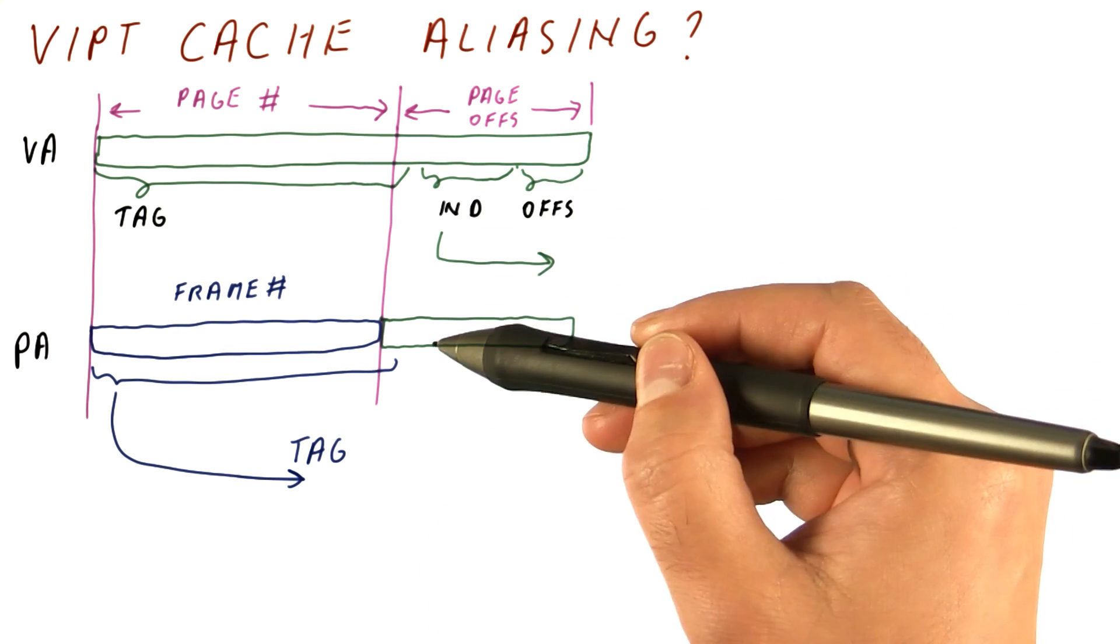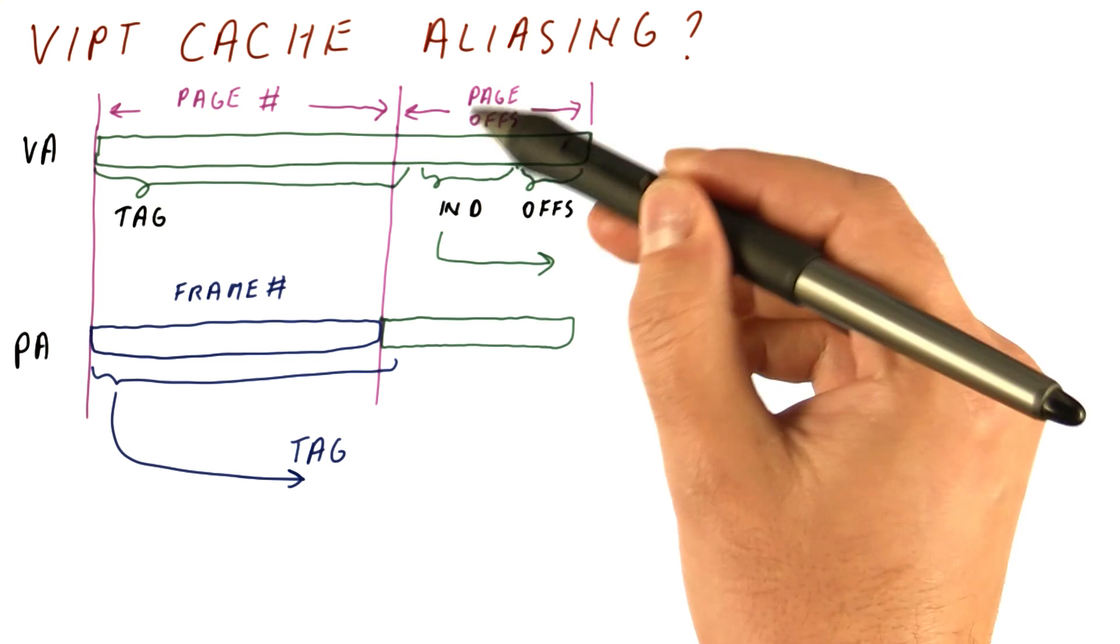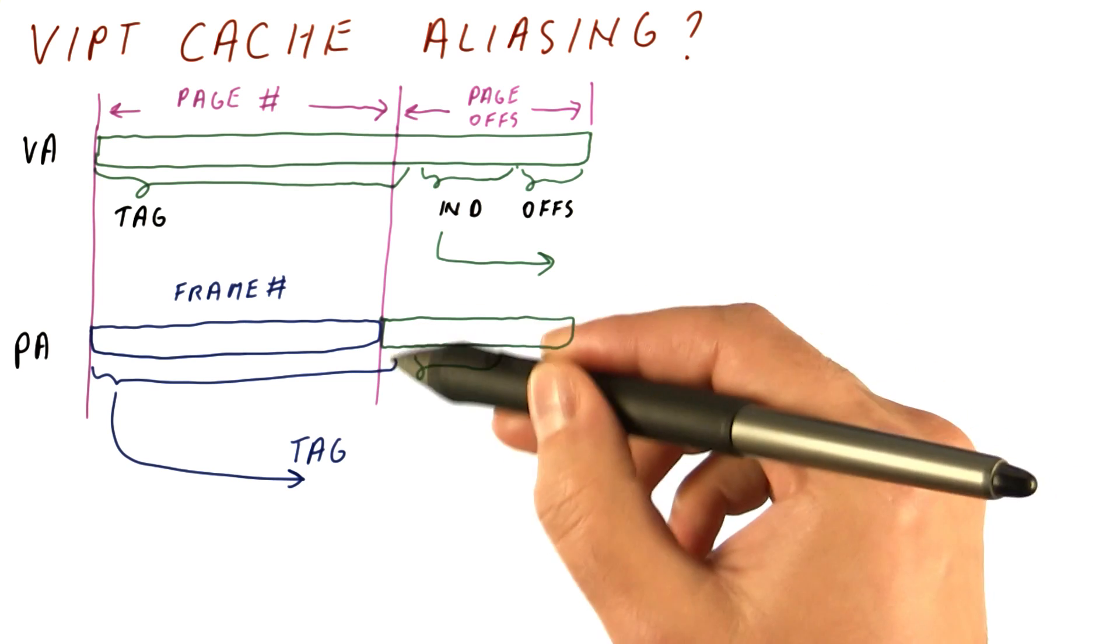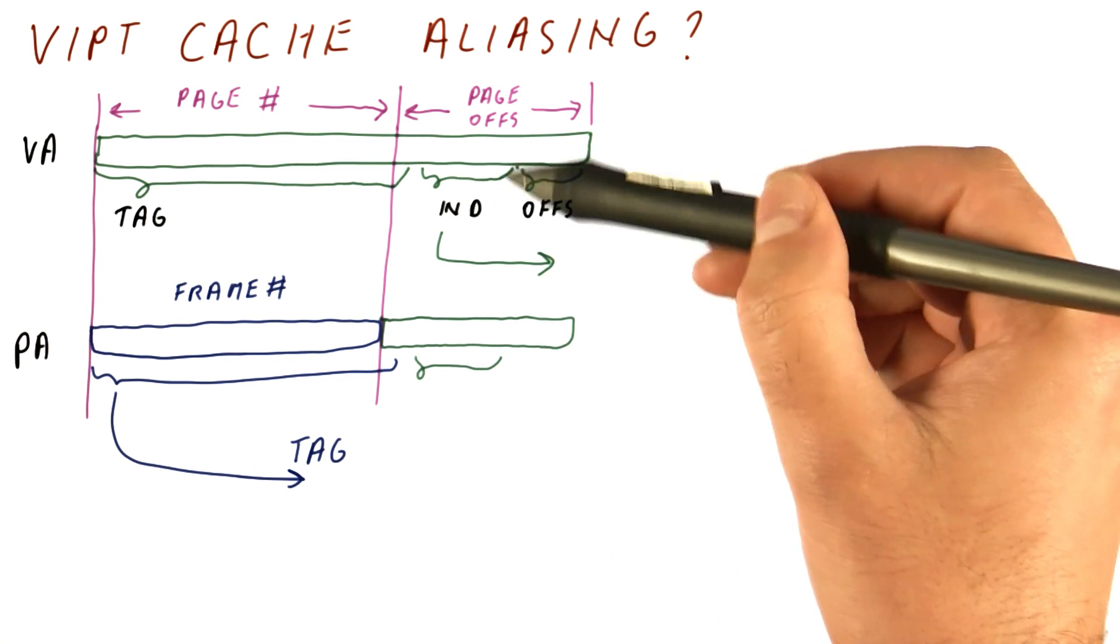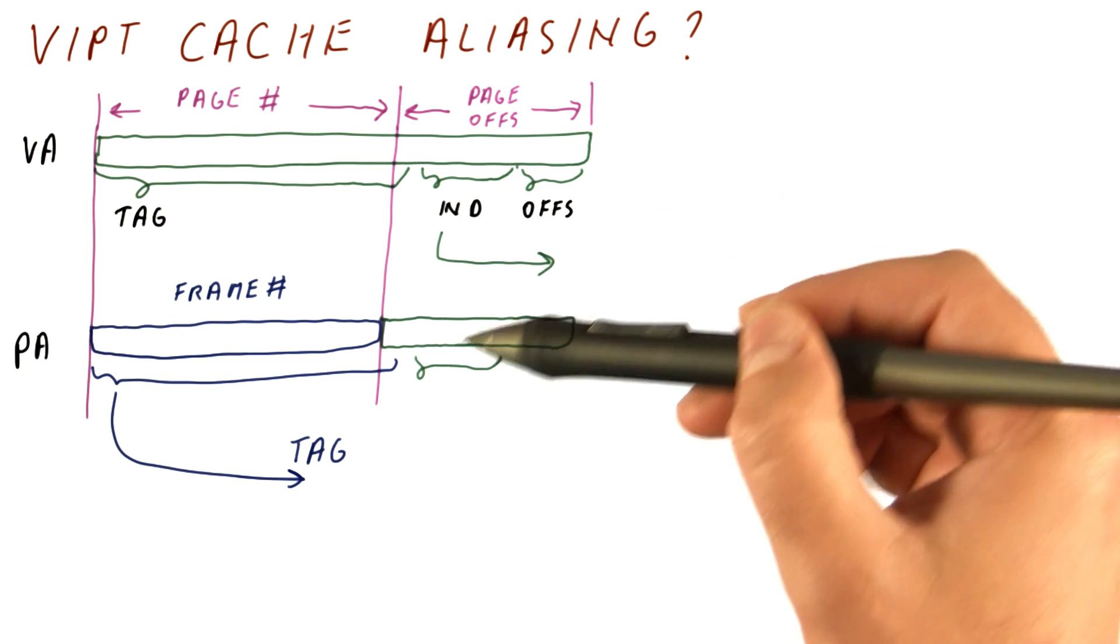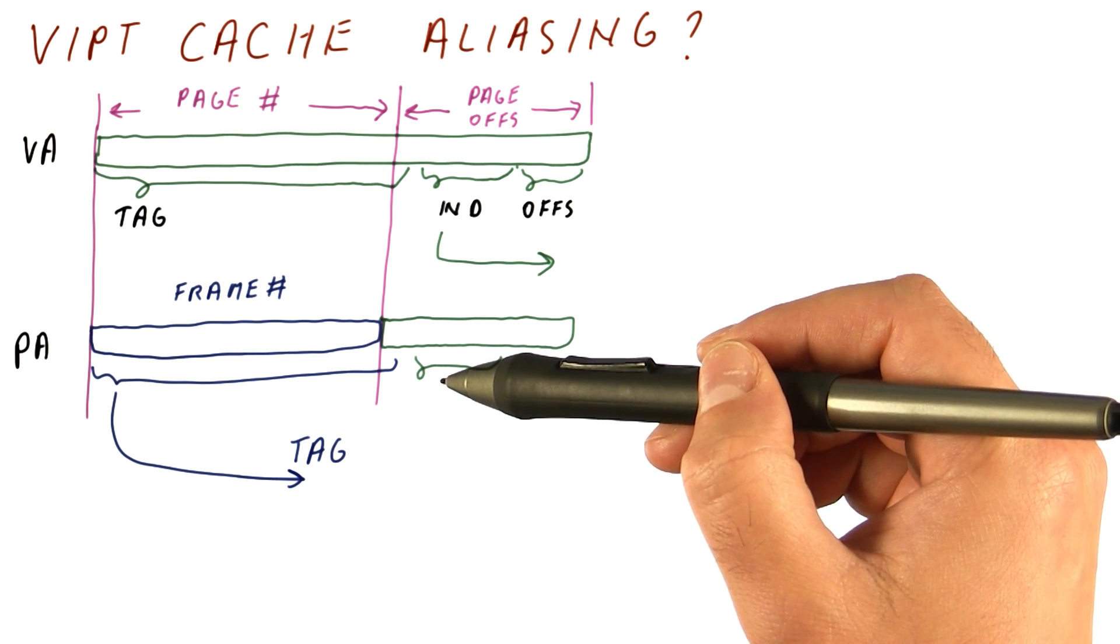So for a small cache, it can happen that the index bits that we use all come from the page offset, which means they're the same as if we took them from the physical address. So although we are indexing using the virtual address, in reality, we are actually using the same index that we would be using if we were using the physical address, which means there would be no aliasing.